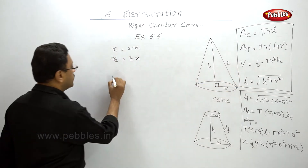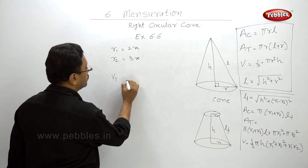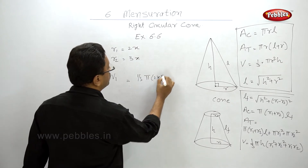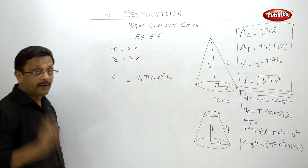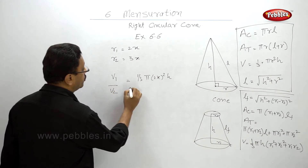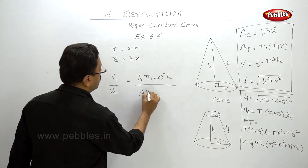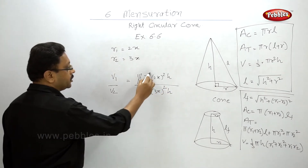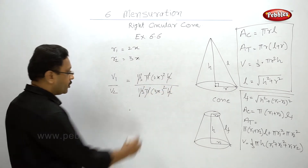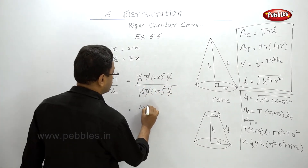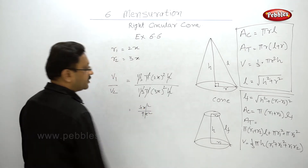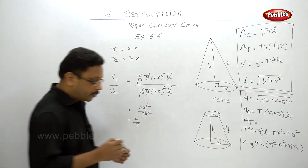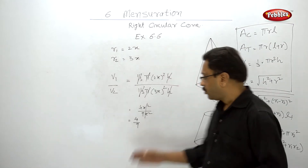The formula for volume: V1 = (1/3)π(2x)²h. We divide by V2 because we want to find the ratio, where V2 = (1/3)π(3x)²h. The common terms get cancelled, leaving 4x² upon 9x². The x² cancels and you get the ratio 4:9.